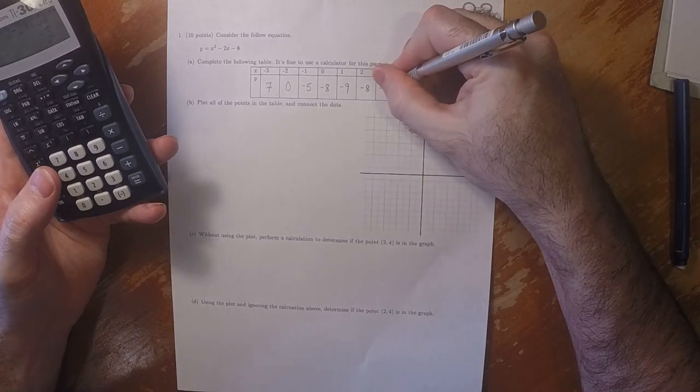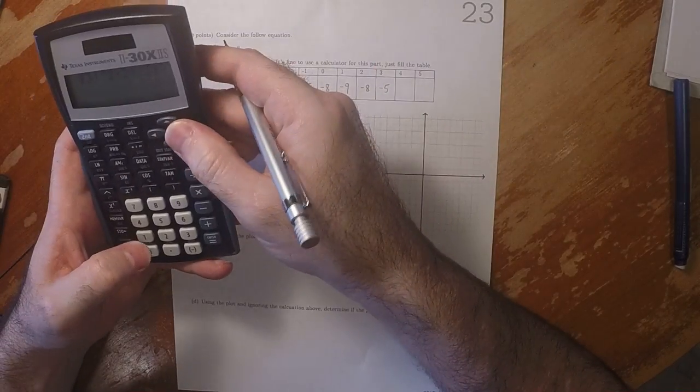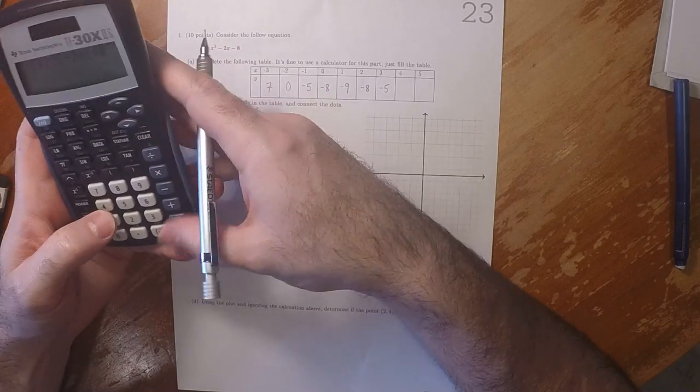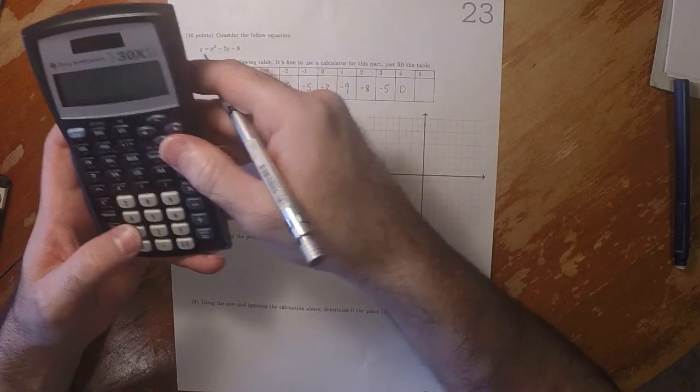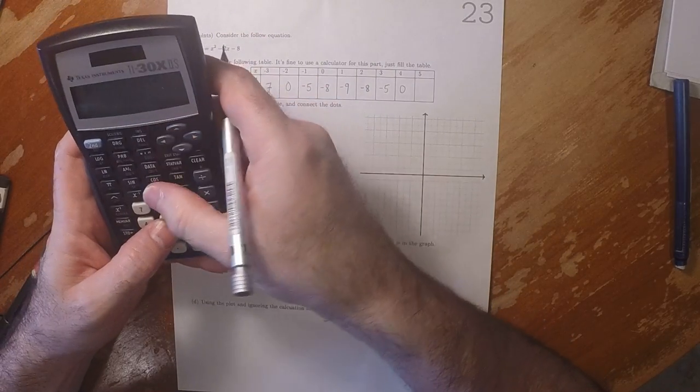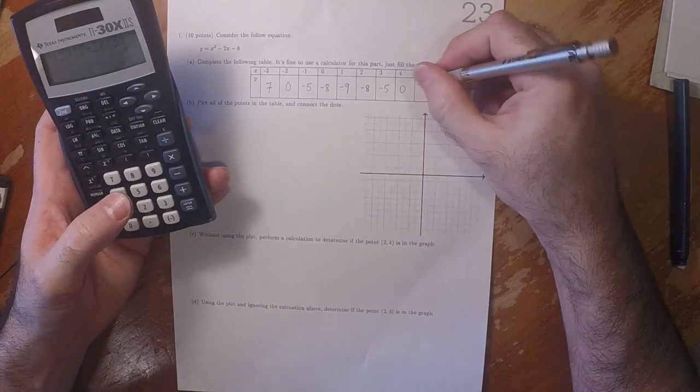At x = 4, the value is 0, and at x = 5, the value is 7.